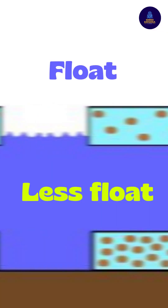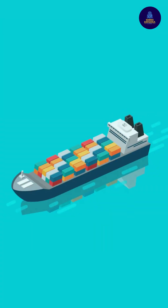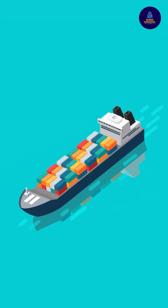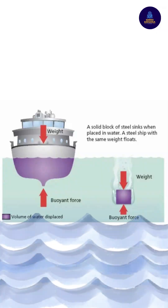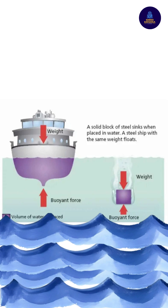Now coming to the third factor, which is mass and surface area. If objects have more mass, they will sink, and if objects have less mass, they will float. But then why do heavy ships not sink? Why do they float on water? The answer lies in the concept of surface area. Because ships have a very large surface area, they experience a very high amount of buoyant force, because of which they float. On the other hand, if the surface area is less, then there are high chances that the object will sink.